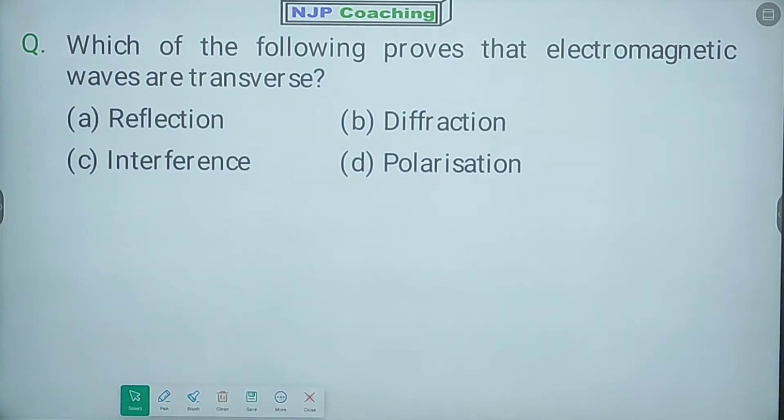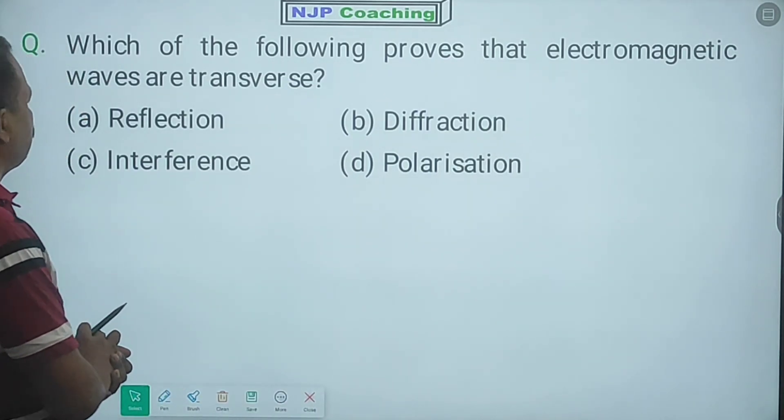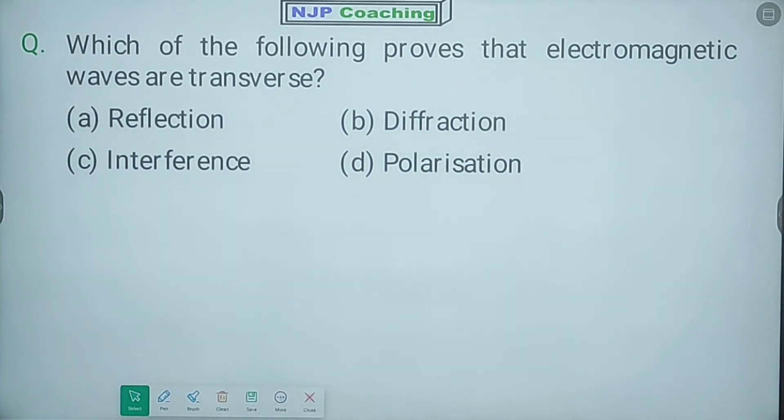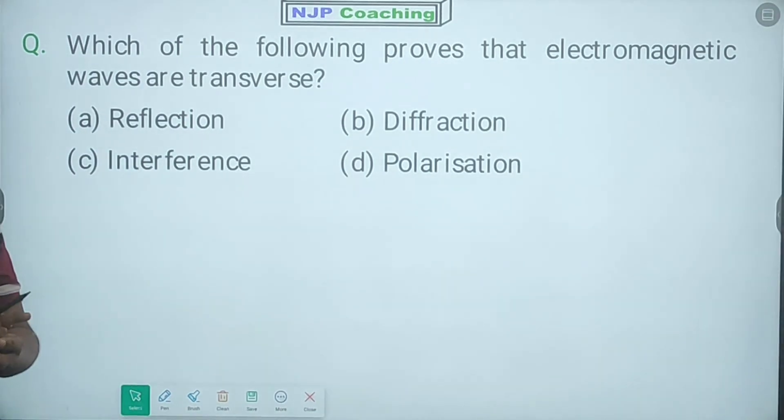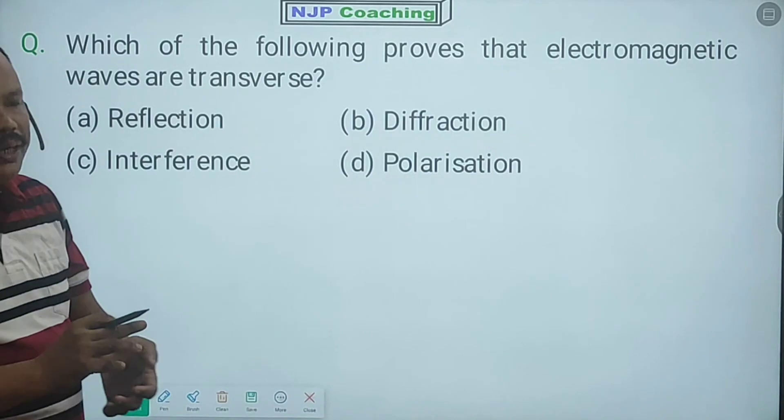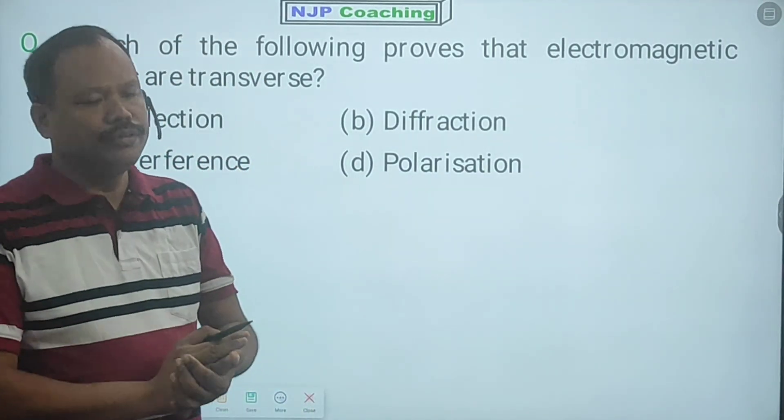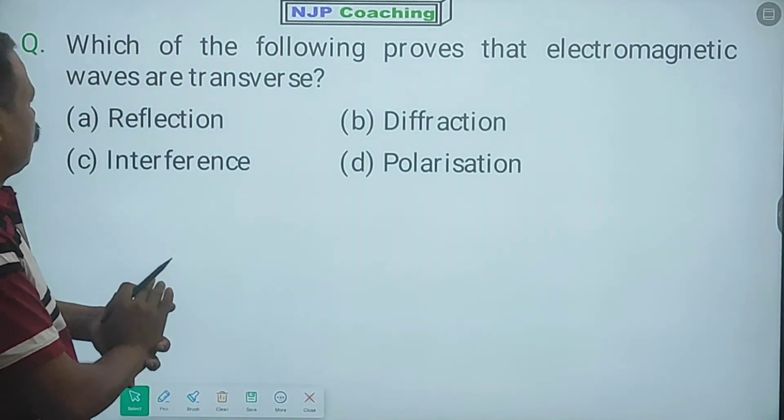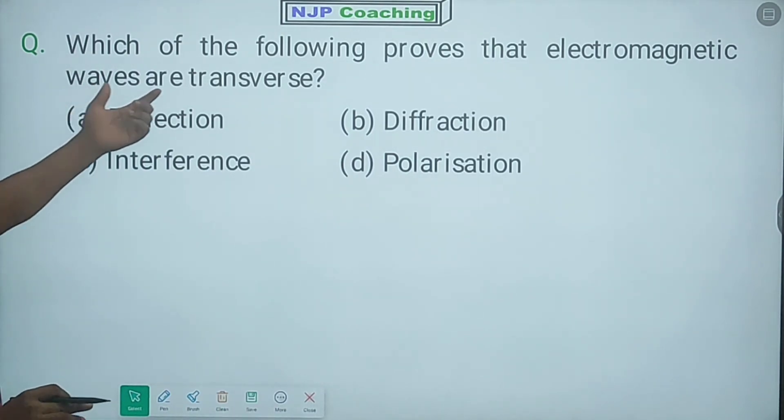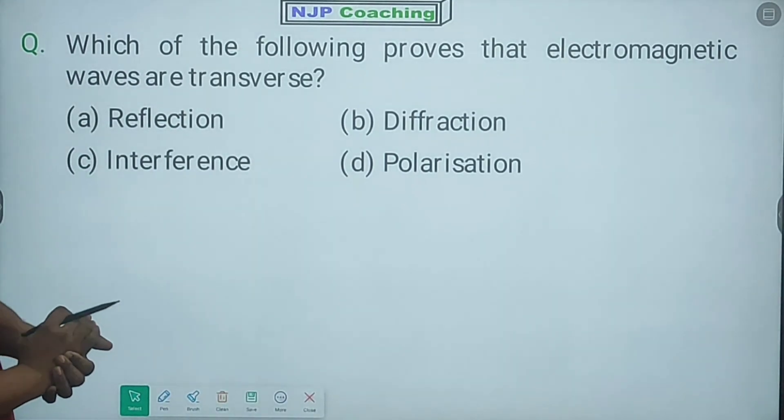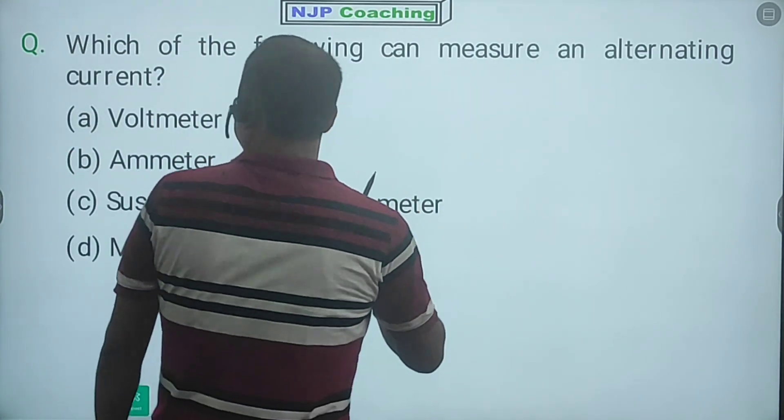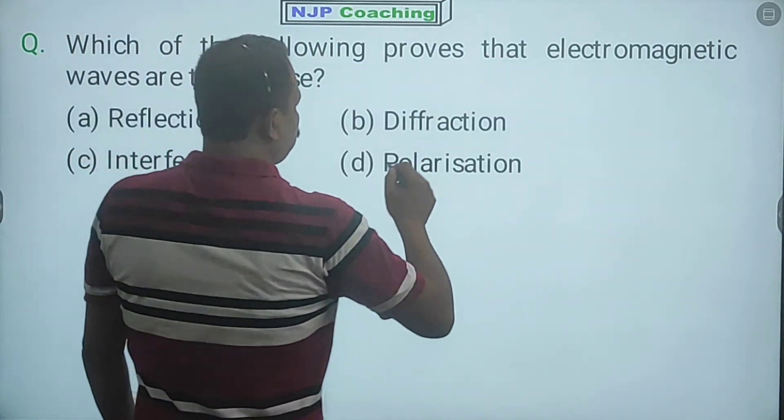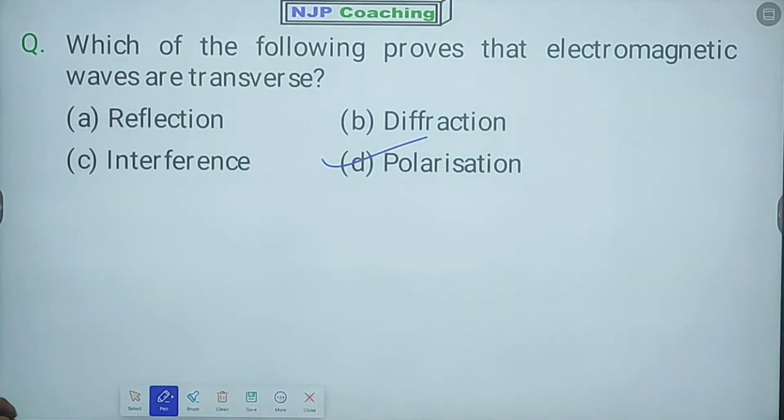Next, which of the following proves that electromagnetic waves are transverse? Which of the following proves can we see? Polarization. Option number B.